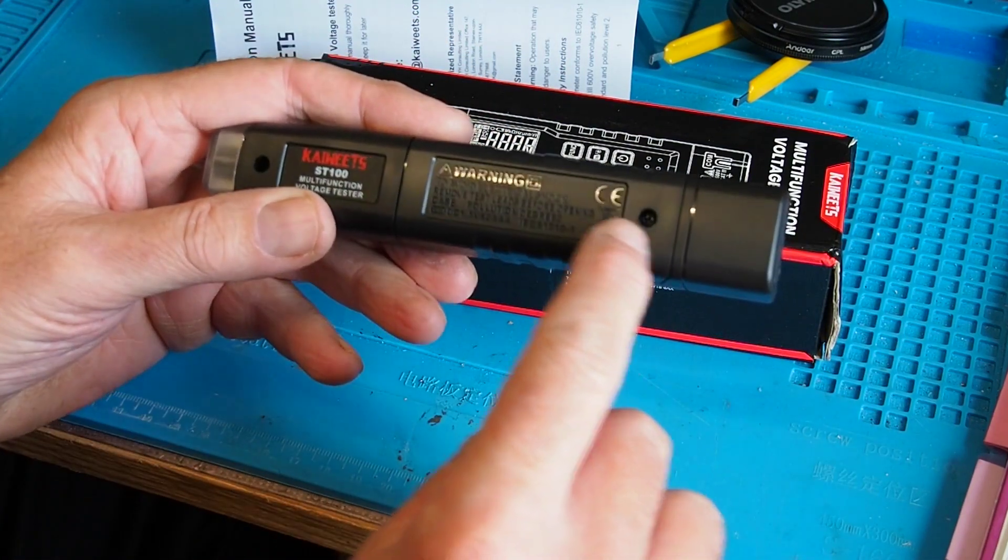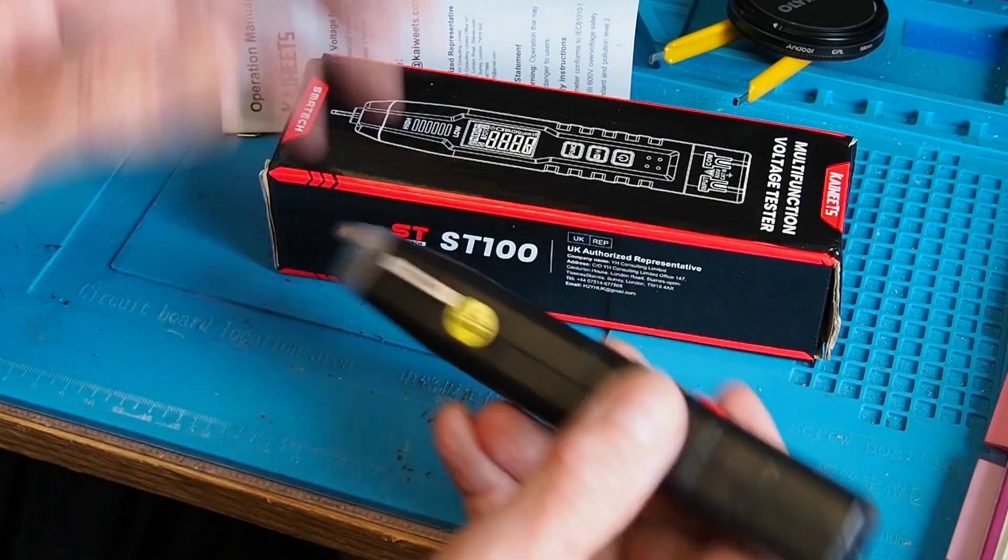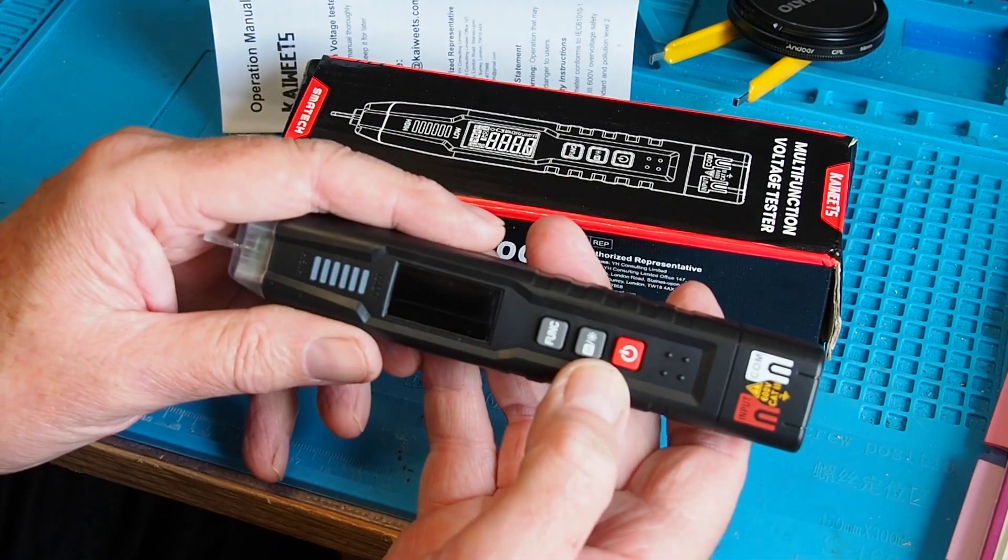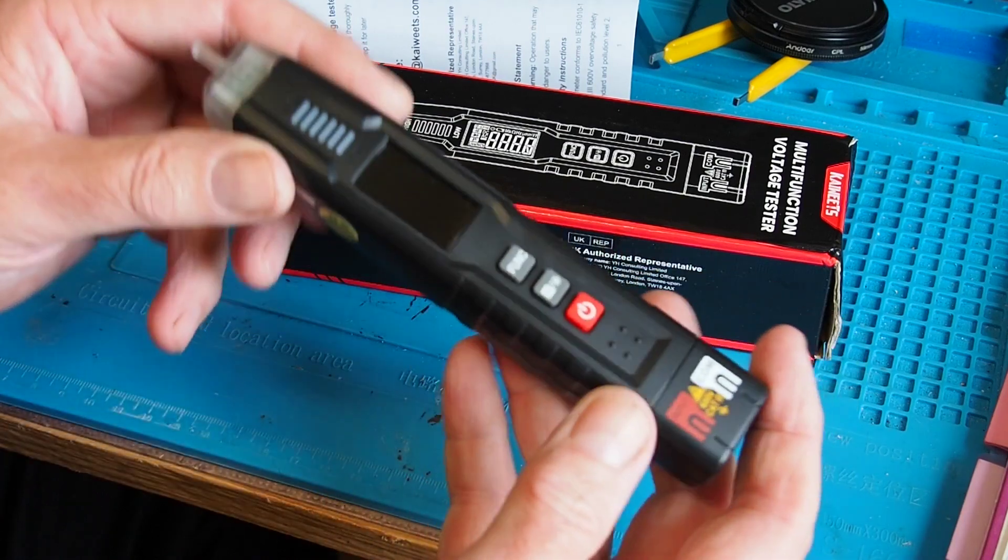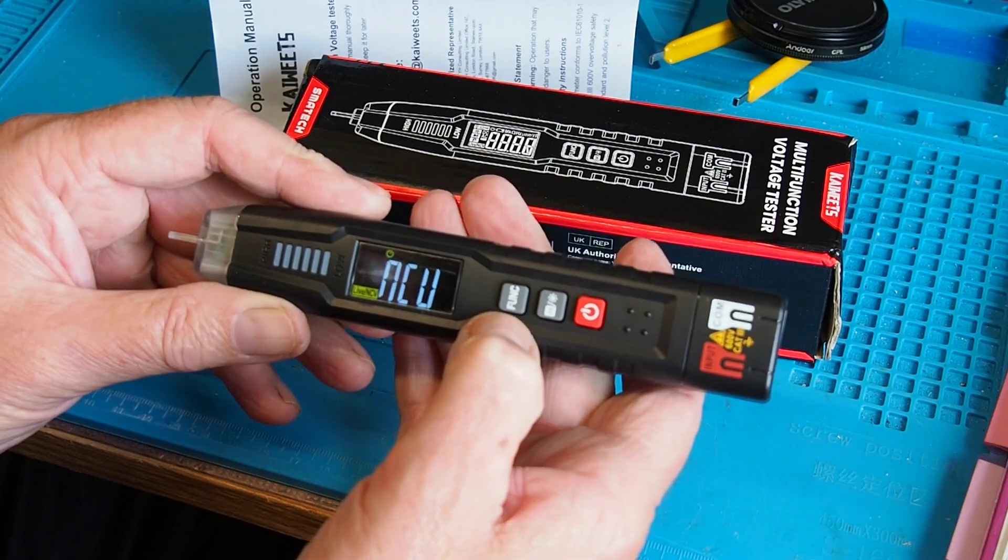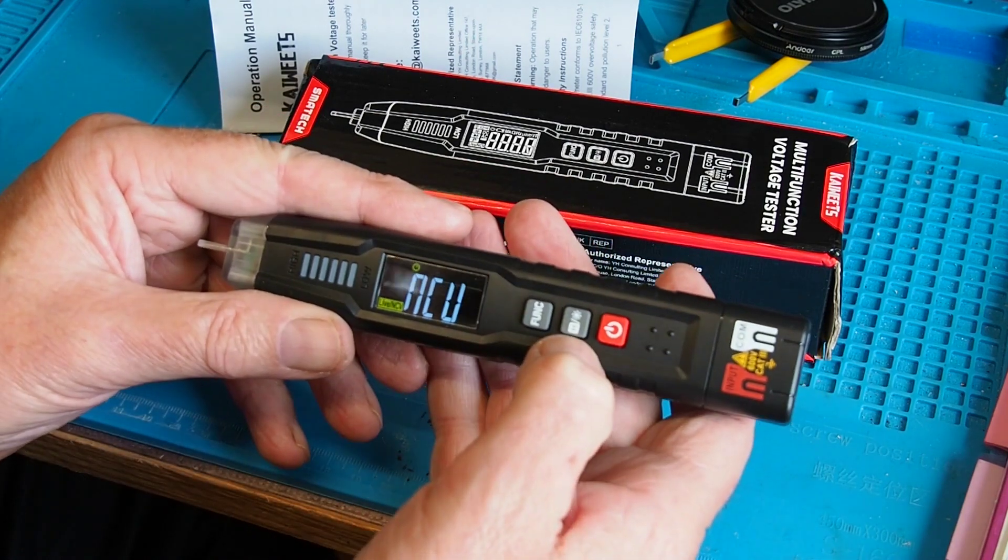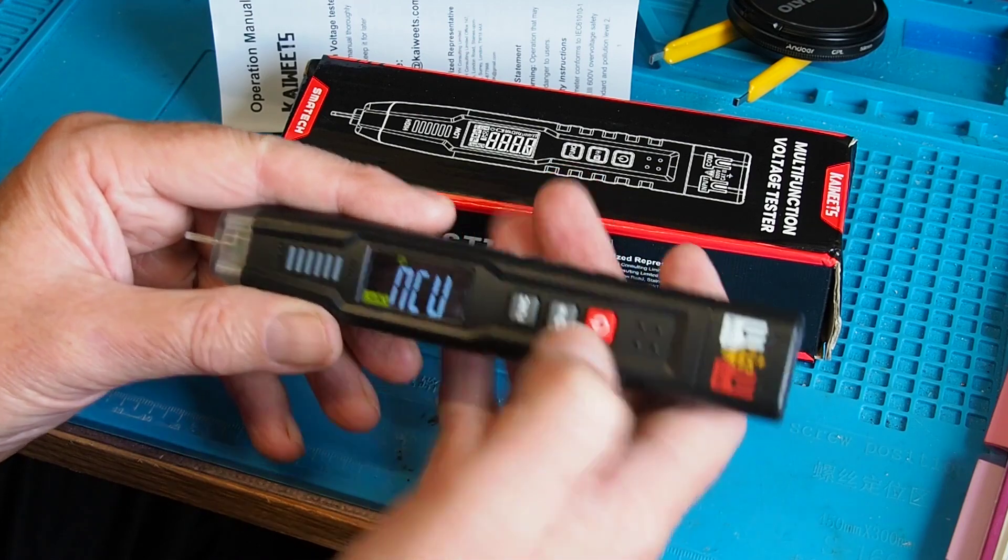There are two triple-A batteries in there. You do get the batteries with the meter so you can get it working out of the box. If I switch on we've got a function button which allows us to hop through the various modes, a hold switch to freeze the display.